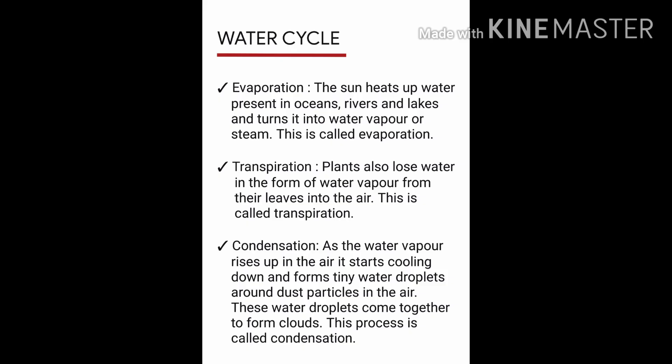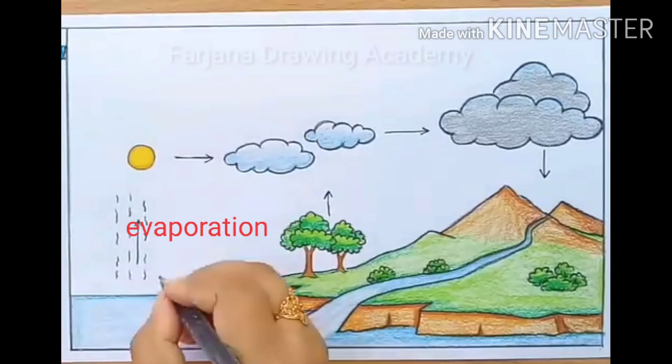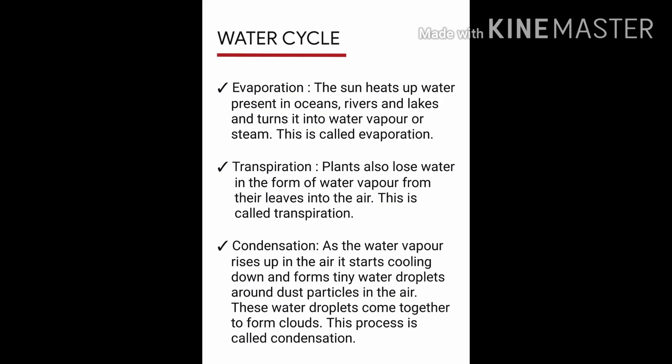In nature, water keeps changing its form by cooling and heating continuously. This cycle is called the water cycle. Today I will explain how all these processes are involved in the water cycle. First, the sun heats up water present in oceans, rivers, and lakes and turns it into water vapor or steam. This is called evaporation.